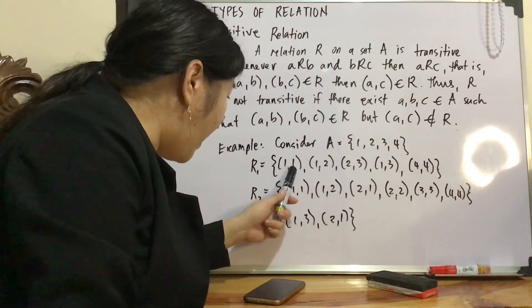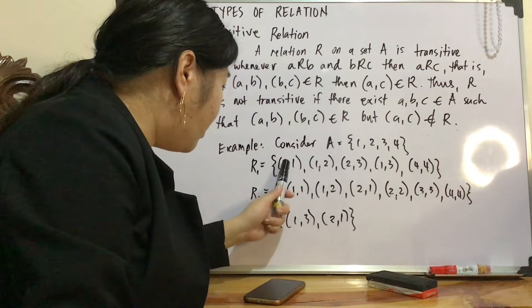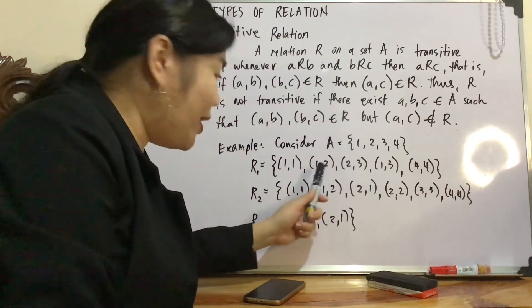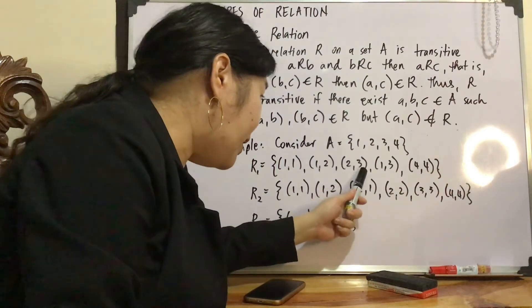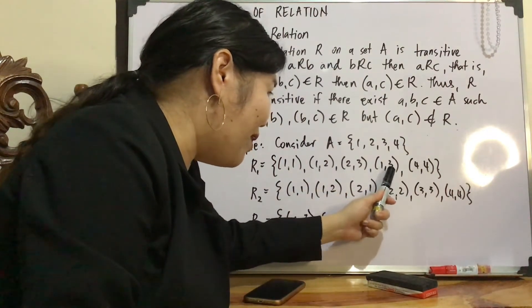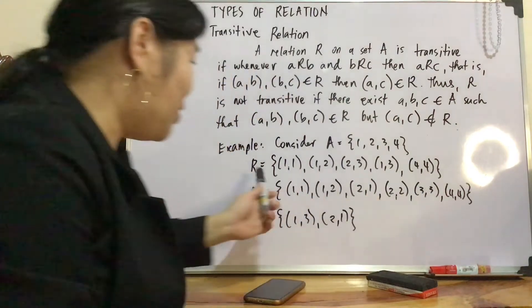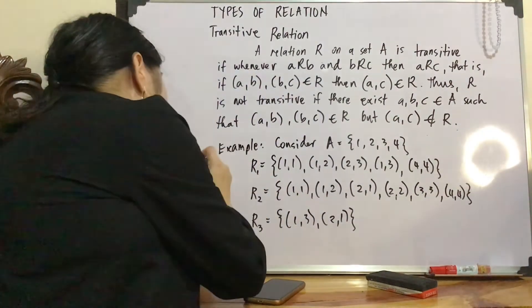Let's look at R1. So we have (1,1), we have (1,2). So the resulting is (1,2). It's here. Okay, let's consider these two. (1,2), (2,3), (1,3). It's here also. Alright, any other? None.